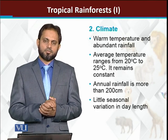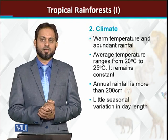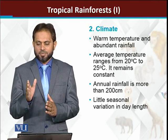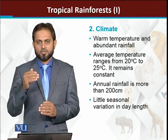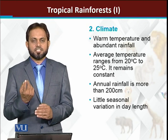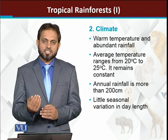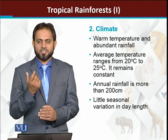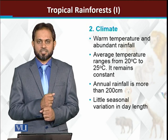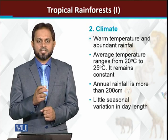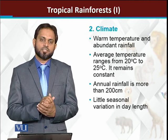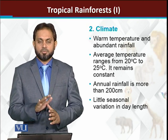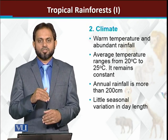The climatic conditions: tropical rainforests, due to their presence at the equator, usually have one season throughout the year — with only slight variations in temperature. The approximate temperature of tropical rainforests is from 20 to 25 degrees centigrade throughout the whole year; the temperature remains essentially the same.